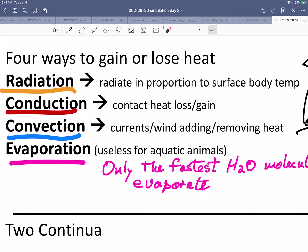When we talk about managing heat and animals dealing with heat, there are four ways to gain or lose heat: radiation, conduction, convection, and evaporation.